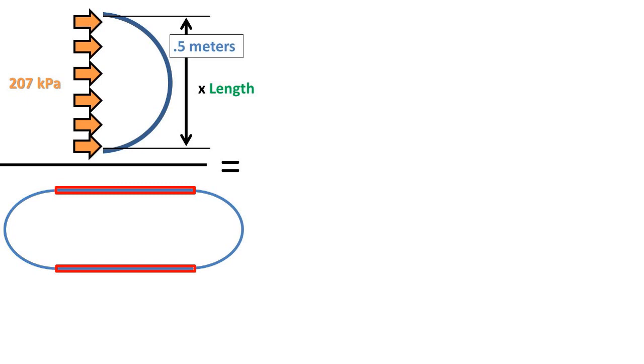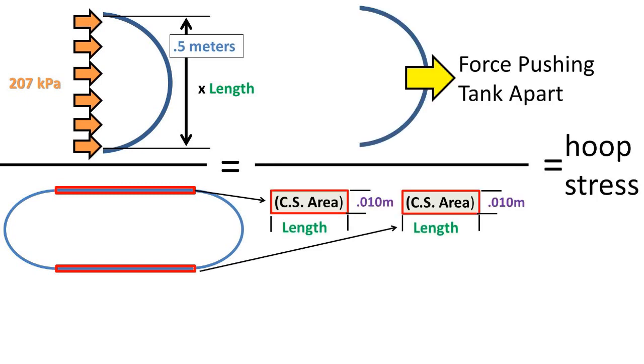We then divide that force by the two areas formed when taking a cross-section of the pressure vessel. So the force pushing the pressure vessel apart divided by two times the pressure vessel thickness times the length equals the hoop stress.